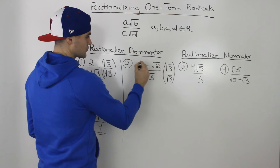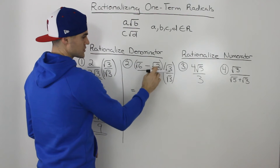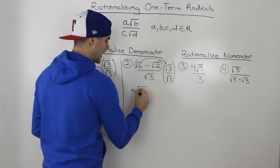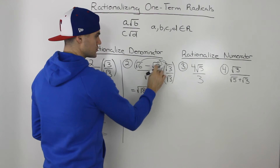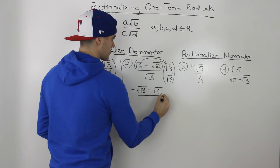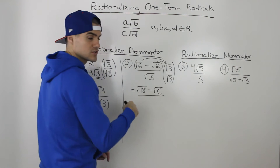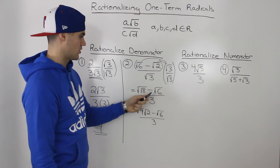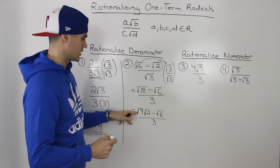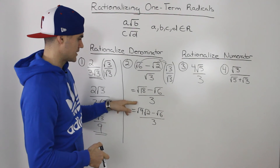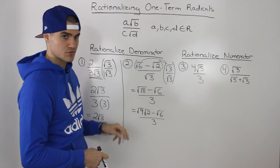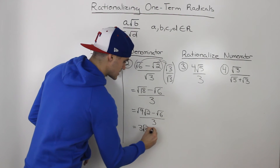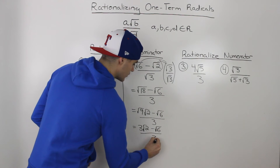We take this root 3 and distribute it into the brackets with root 6 minus root 2. Root 3 times root 6 gives you root 18, and root 2 times root 3 gives you root 6. Root 3 times root 3 gives you the square root of 9, which is just 3. Now root 18 can be simplified further — we can split it into root 9 times root 2, and root 9 gives us 3, so it becomes 3 root 2 minus root 6 all over 3.